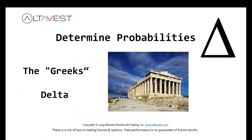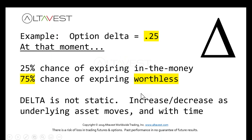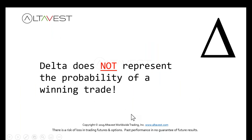Here's the stock index — in this case the E-mini S&P 500 — with an upper and lower boundary of the trade, a wide margin of error between them. We're going to look at the Greeks, just two of them. Delta, the way we use it, is the approximate probability of an option expiring in the money. So if a delta is 0.25, there's a 25% chance that strike price would expire in the money — conversely, a 75% chance it expires out of the money or worthless. Remember, delta is always moving with price and time, and it is not the probability of a winning trade.